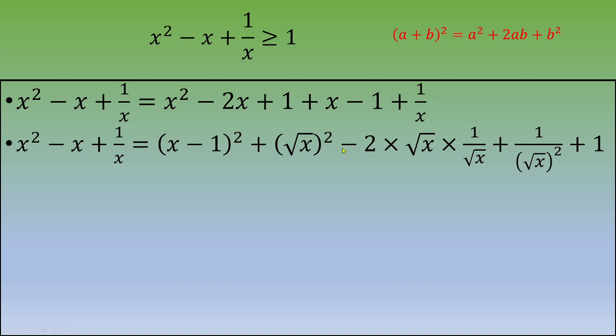So we've got negative 2 square root of x times 1 over square root of x. This is negative 2, and we need to end up with negative 1, so we need to add 1 at the end. With these three terms we can transform that into a remarkable identity.